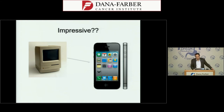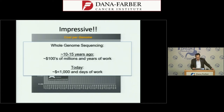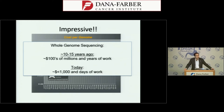Advances in DNA sequencing technology have been extraordinary — far exceeding improvements in consumer computing. When the Human Genome Project was completed not many years ago, sequencing a single patient's genome cost hundreds of millions of dollars and took years of work. Now that same sequencing costs less than a thousand dollars and takes days. This means studies that would have been impossible even for the wealthiest institutions a couple of decades ago — like sequencing 500 patients' normal and cancer genomes to find differences — are now increasingly feasible and have also become affordable enough to use clinically.